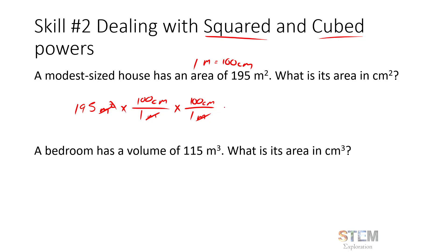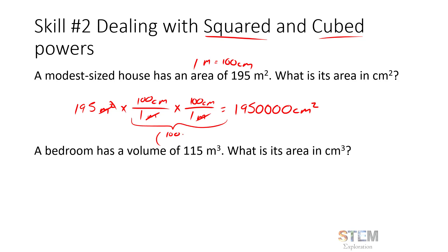Using the conversion factor twice gives centimeters × centimeters on top. 100 × 100 = 10,000, and 10,000 × 195 = 1,950,000 centimeters squared. Another way you might see this written online is to write the conversion factor as (100 centimeters / 1 meter) and square that whole expression — that's an equivalent approach for finding the area.